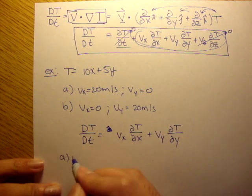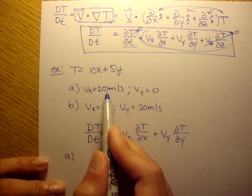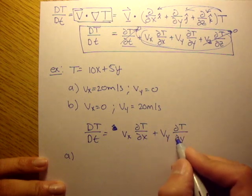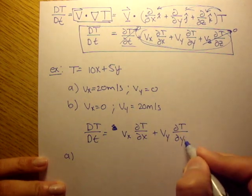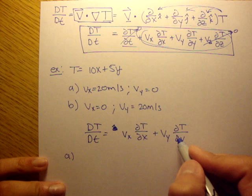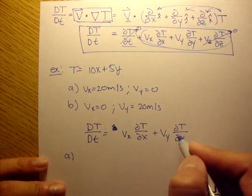So for A, where we have Vx is equal to 20, and Vy is equal to 0, well, then that term, this entire term, is 0. Right? Because Vy is 0. It doesn't matter what the partial in respect to y is of the temperature.